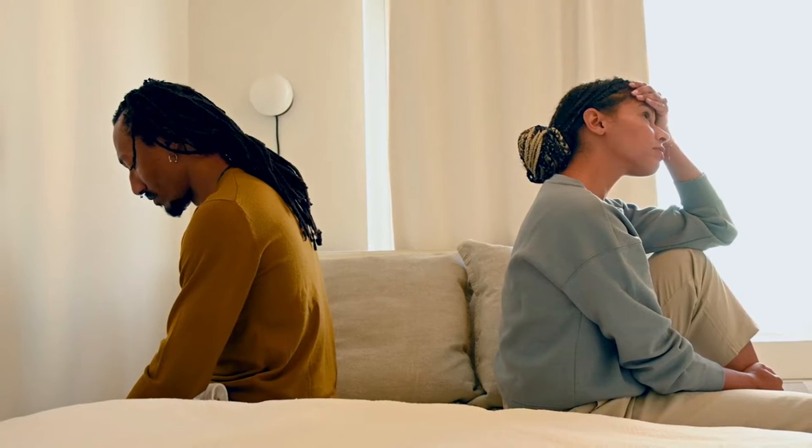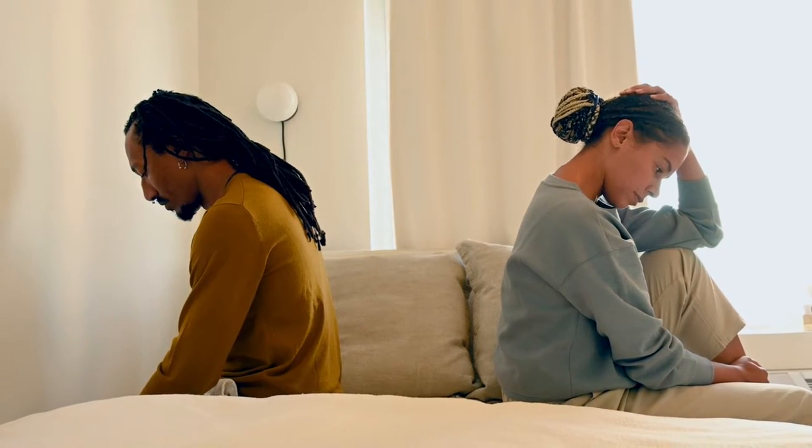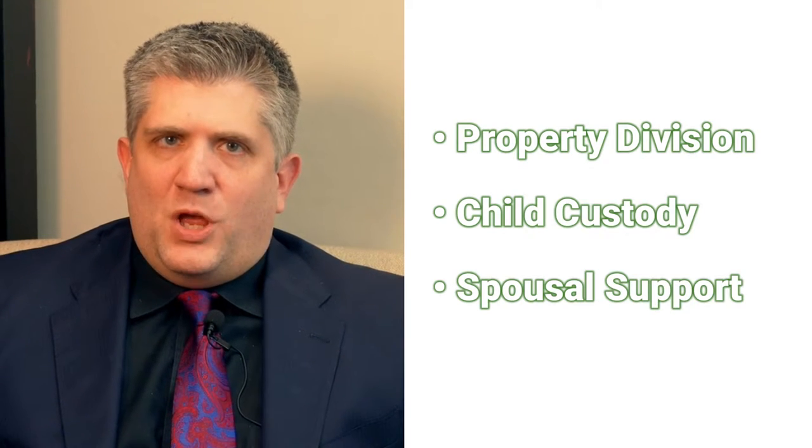An uncontested divorce is a streamlined and amicable way to end a marriage when both parties agree on all major issues, including property division, child custody, and spousal support. One of the first steps in this process is to fill out the required forms accurately. Let's break down some of the essential forms involved.